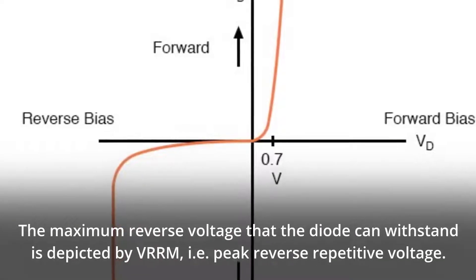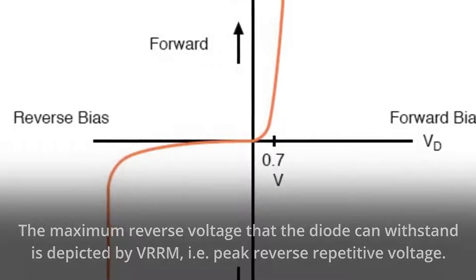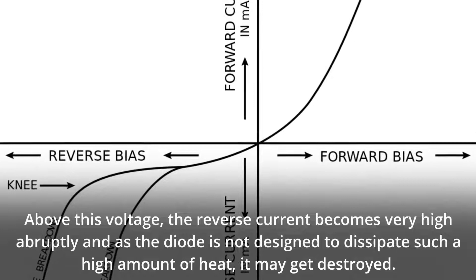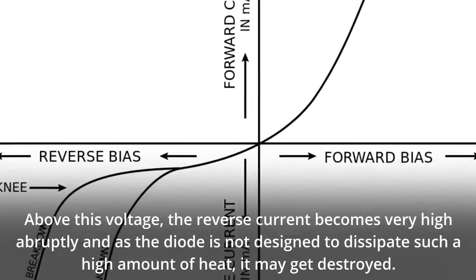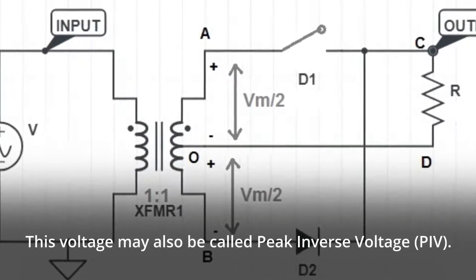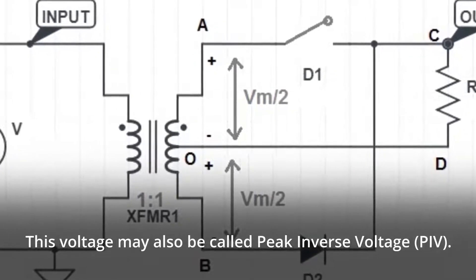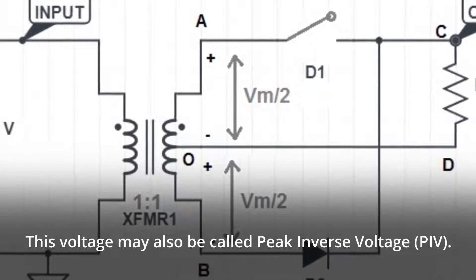The maximum reverse voltage that the diode can withstand is depicted by VRRM, i.e. peak reverse repetitive voltage. Above this voltage, the reverse current becomes very high abruptly and as the diode is not designed to dissipate such a high amount of heat, it may get destroyed. This voltage may also be called peak inverse voltage, PIV.